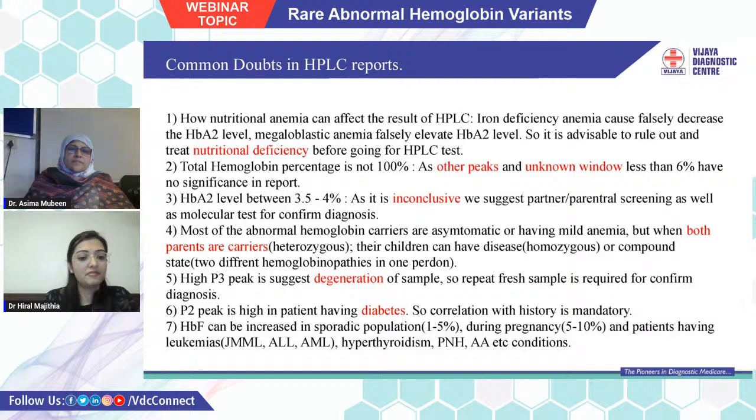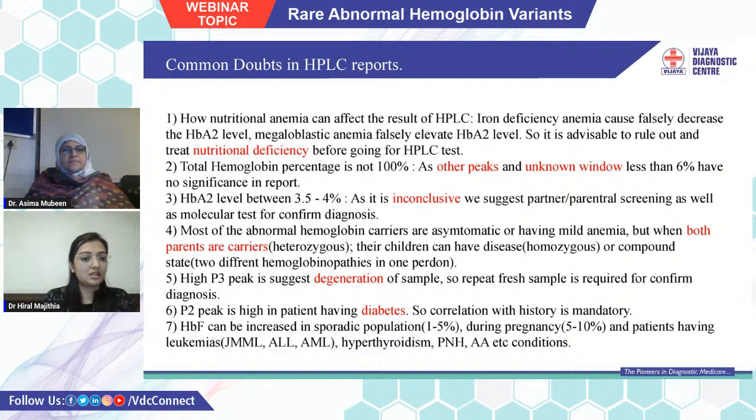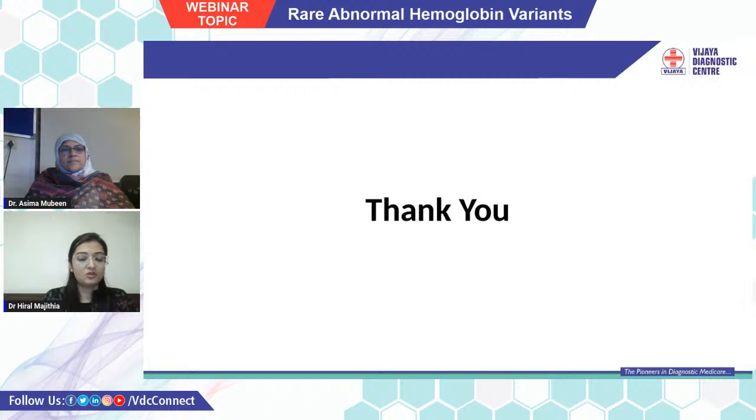When HbF is increased, we must rule out several conditions: in the sporadic population 1–5% can be normal; if the patient is pregnant, 5–10% can be seen; and conditions like juvenile myelomonocytic leukemia, acute lymphocytic leukemia, acute myeloid leukemia, hypothyroidism, paroxysmal nocturnal hemoglobinuria, or aplastic anemia can cause elevation of HbF. Correlation with clinical condition and a complete blood picture is mandatory. This is all about HPLC reporting and rare abnormal hemoglobin variants.